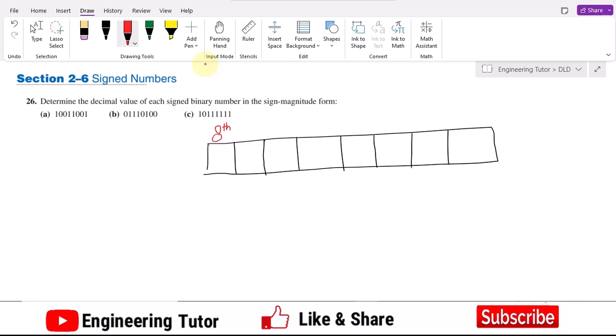Whatever here will be, if this will be 0, this means it's a positive number, while if it is 1 this means that is a negative number.